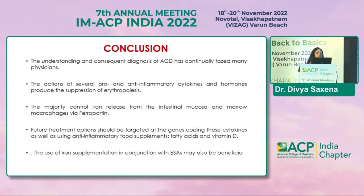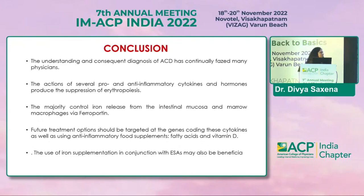In conclusion, understanding and diagnosing anemia of chronic disease has continuously challenged physicians. The actions of several pro- and anti-inflammatory cytokines and hormones produce suppression of erythropoiesis in these patients. The majority control iron release from the intestinal mucosa and marrow macrophages via ferroportin, and future treatment options should be targeted at the genes coding these cytokines as well as using anti-inflammatory food supplements like fatty acids and vitamin D. The use of iron supplementation in conjunction with erythropoietic stimulating agents may also be beneficial in certain scenarios. Thank you.